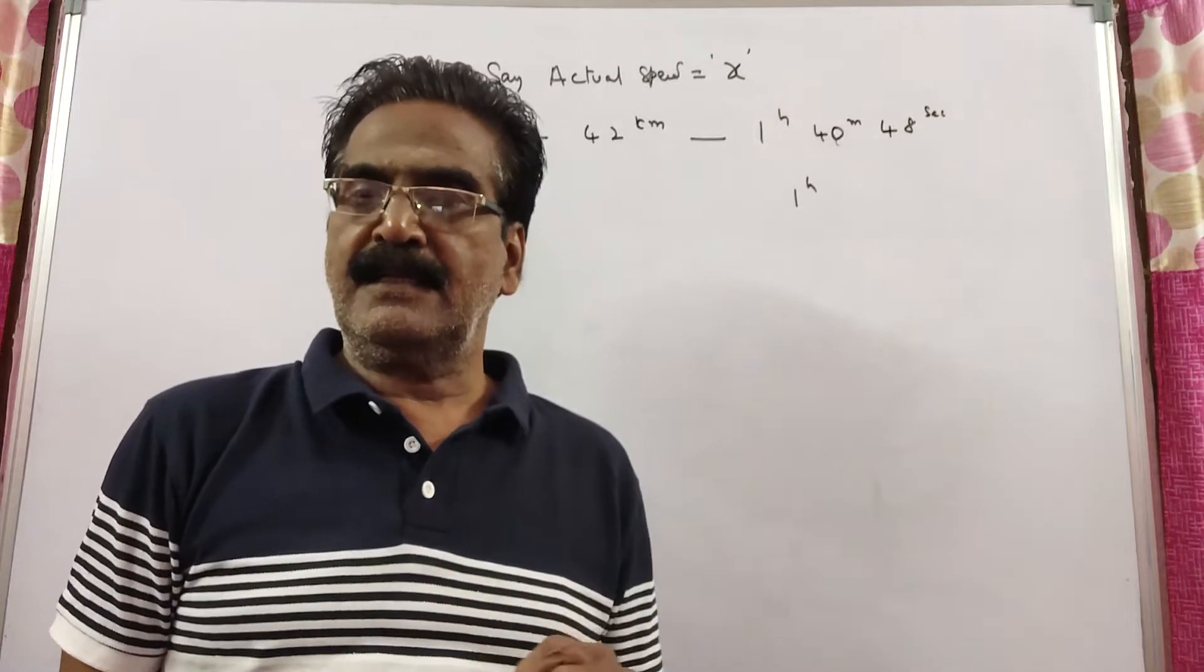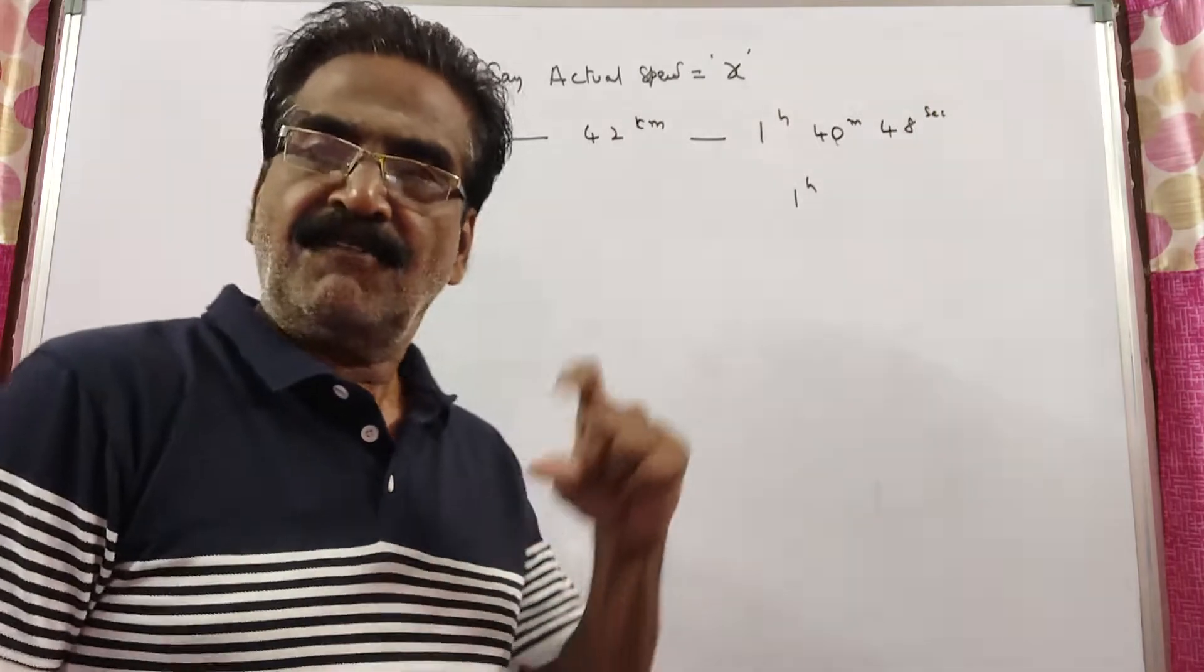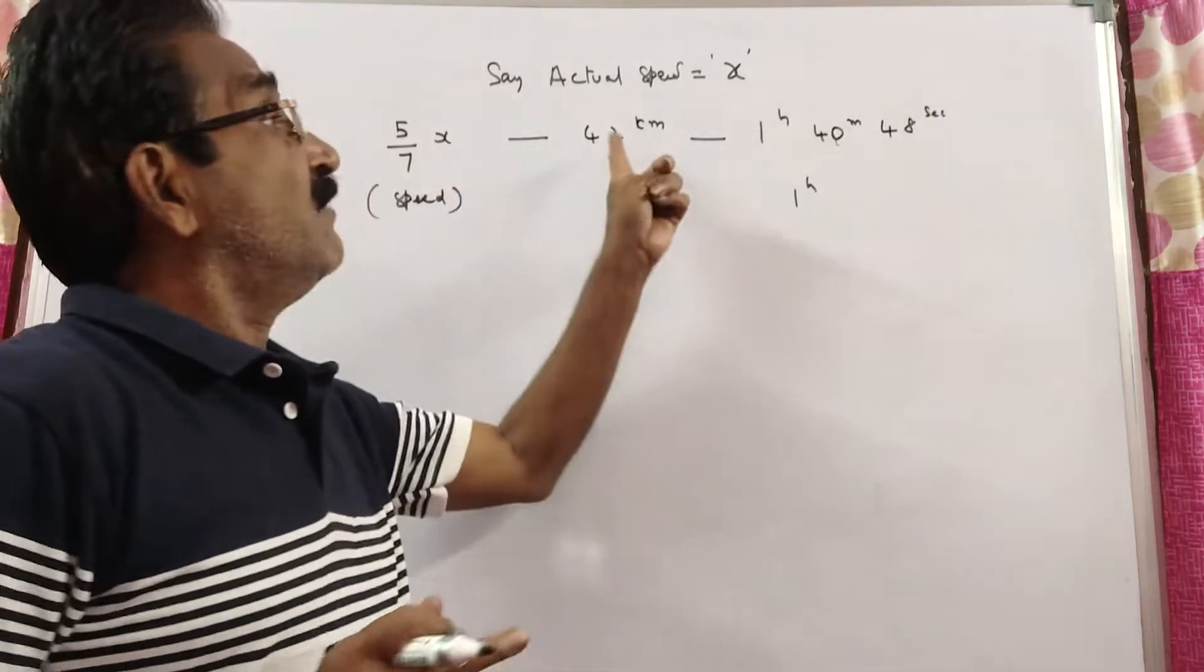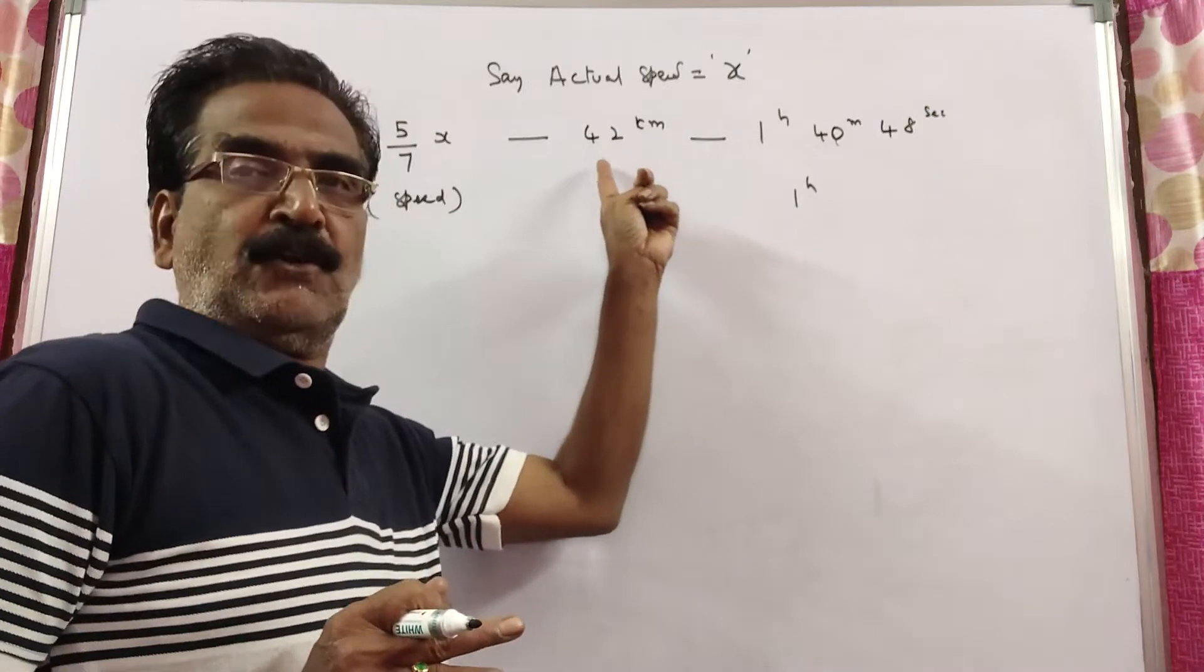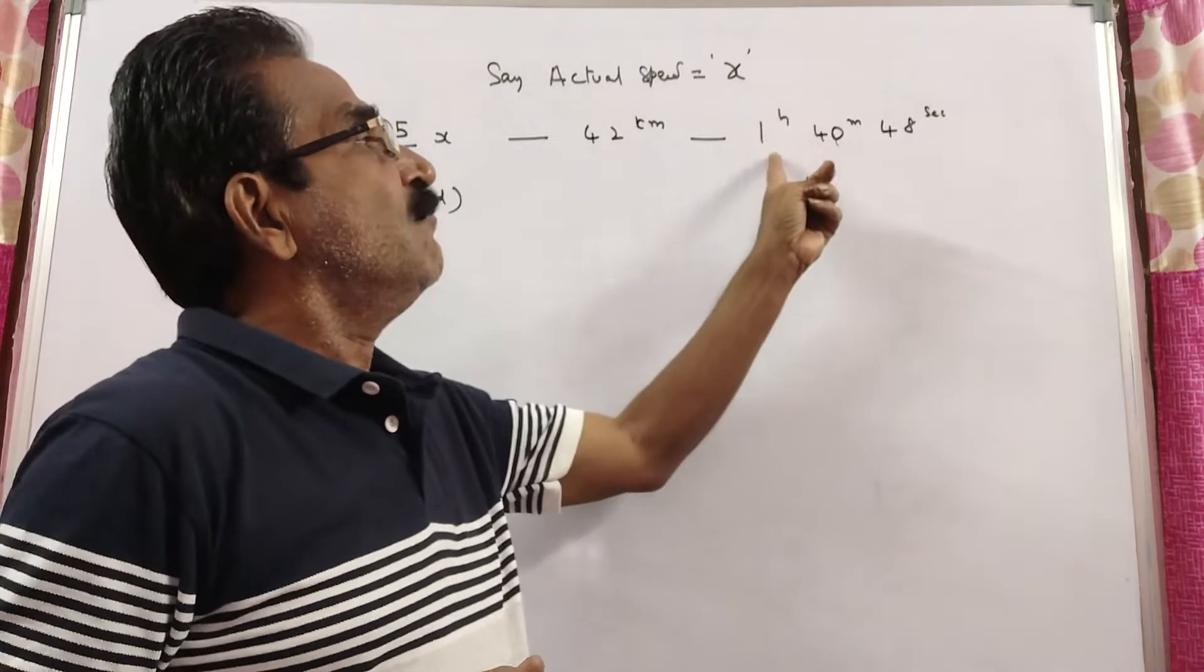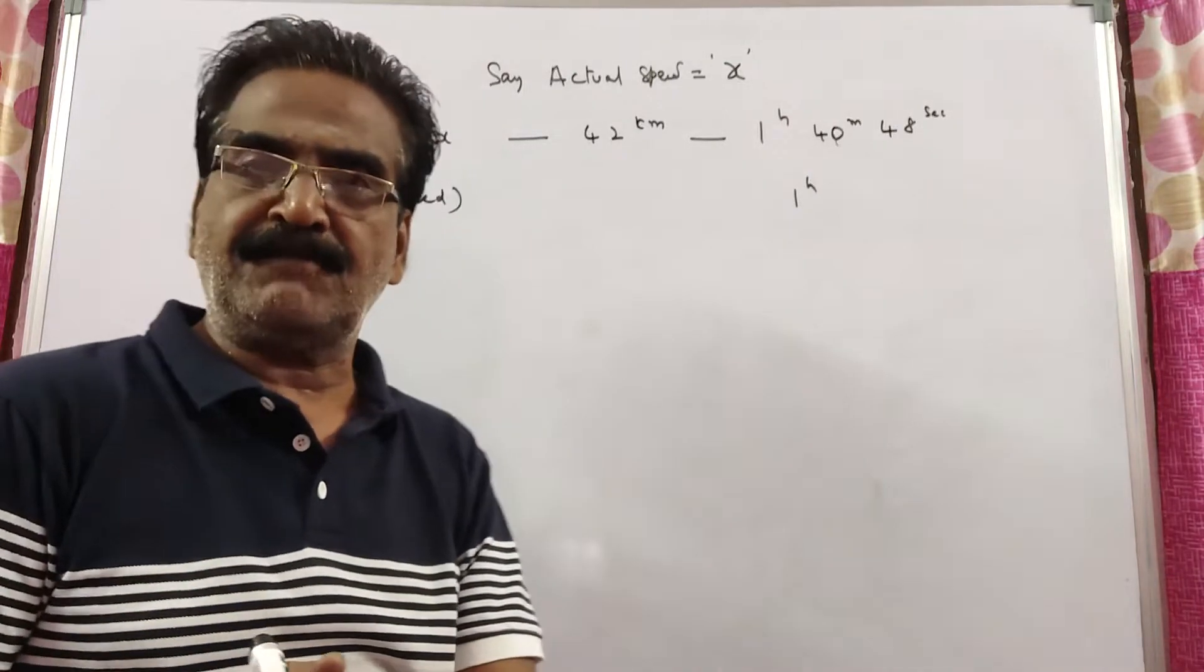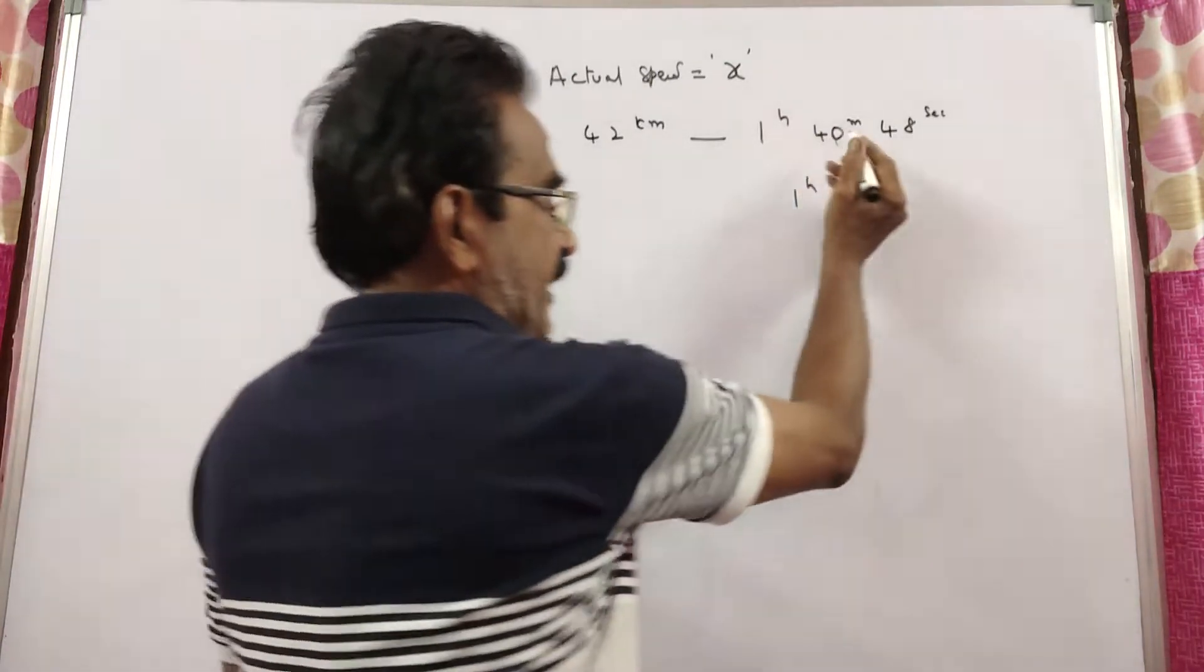If a car traveling at 5/7 of its actual speed covers 42 km in 1 hour, 40 minutes and 48 seconds, then what is the actual speed of the car?